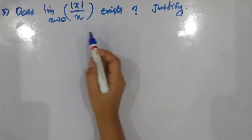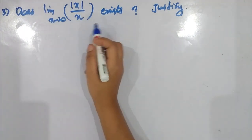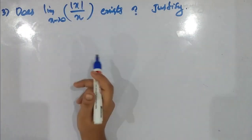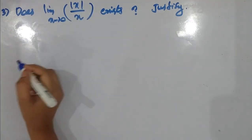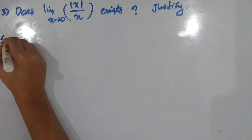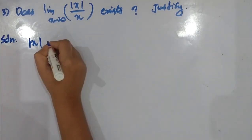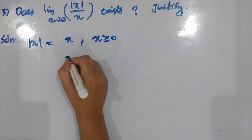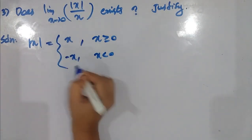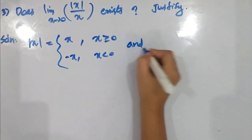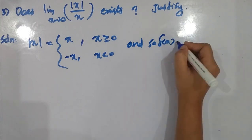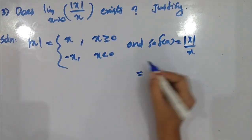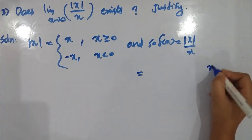The next question: does the limit as x tends to 0 of |x|/x exist? The function is |x|/x. We can define the absolute value function. We can define |x|: if x ≥ 0, then |x| = x; if x < 0, then |x| = −x.